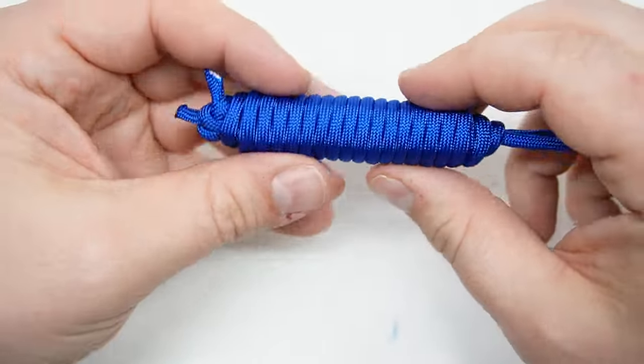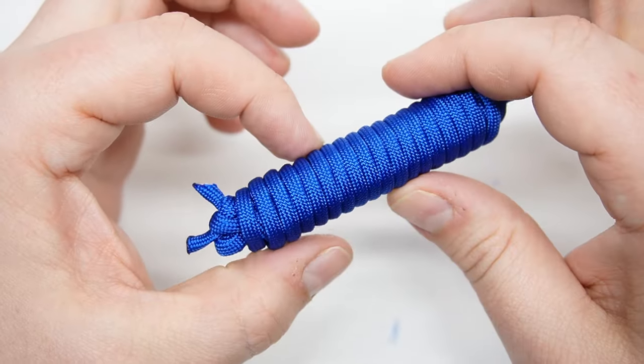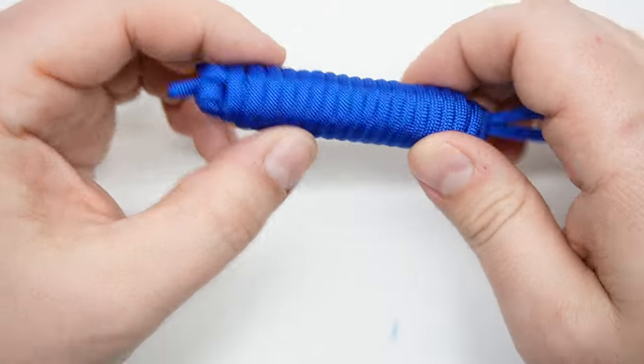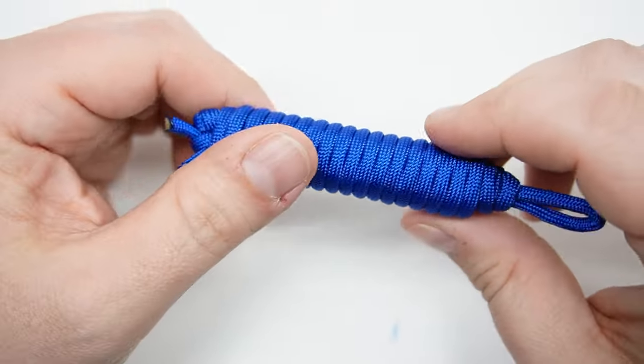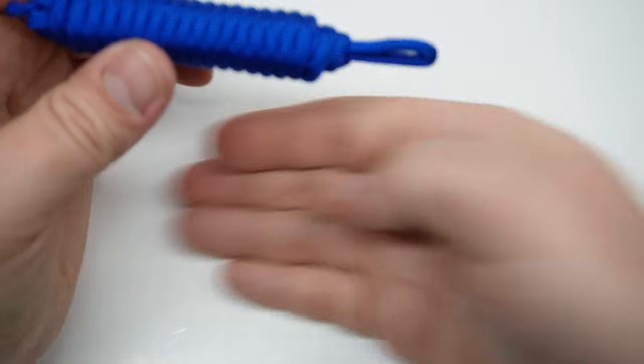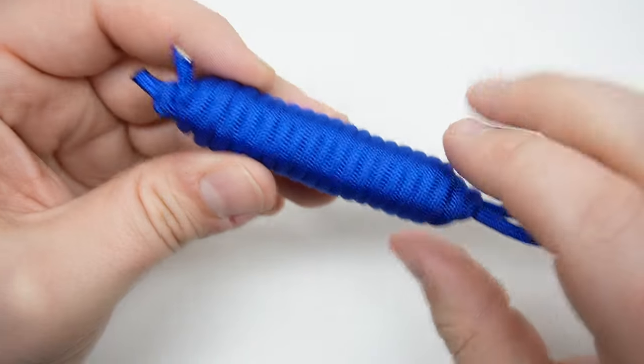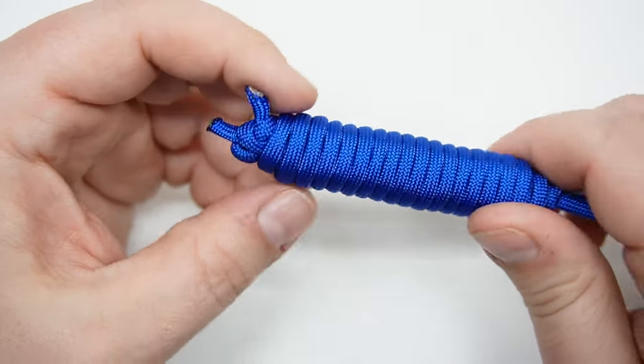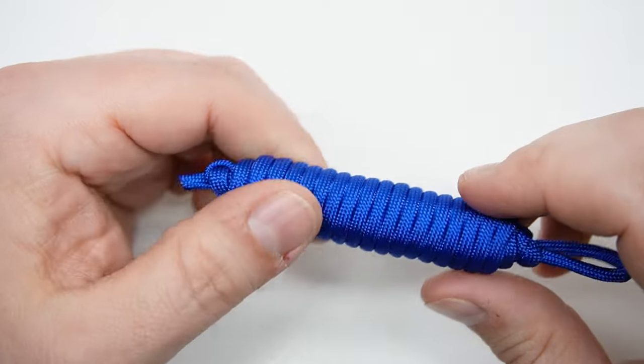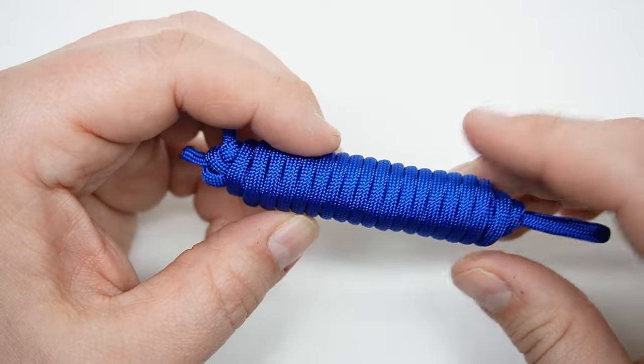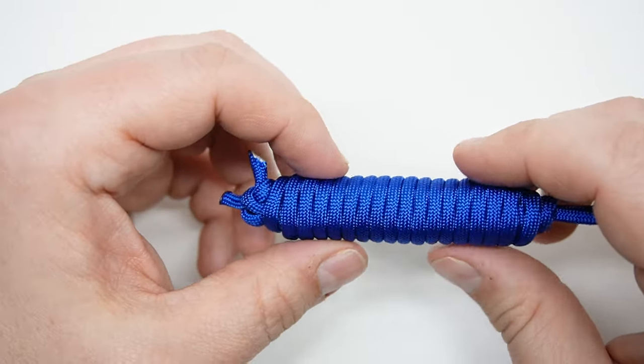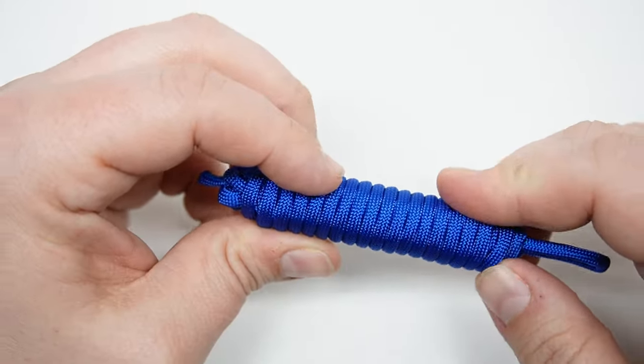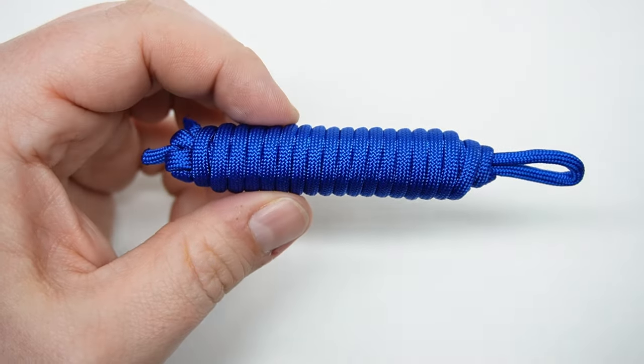I don't know if I have a name for this. We'll call it the paracord caterpillar or something like that, quick deploy caterpillar. Make sure you hit that like button, subscribe button. Let me know what you're putting these on. I'd love to know if there's any other tools you're throwing these on just to keep some paracord around. Don't forget to please support our website, boardparacord.com. That's the whole reason I'm making these videos. Until next time, paracord on.